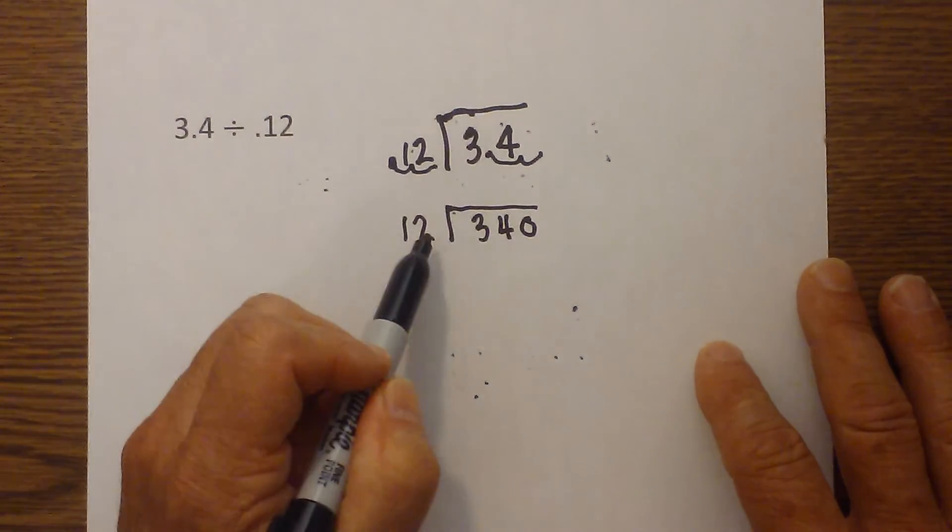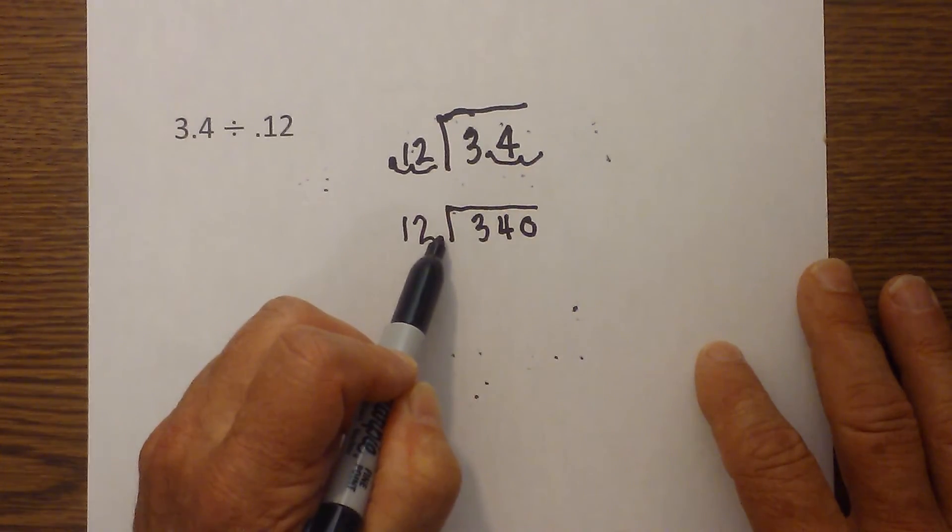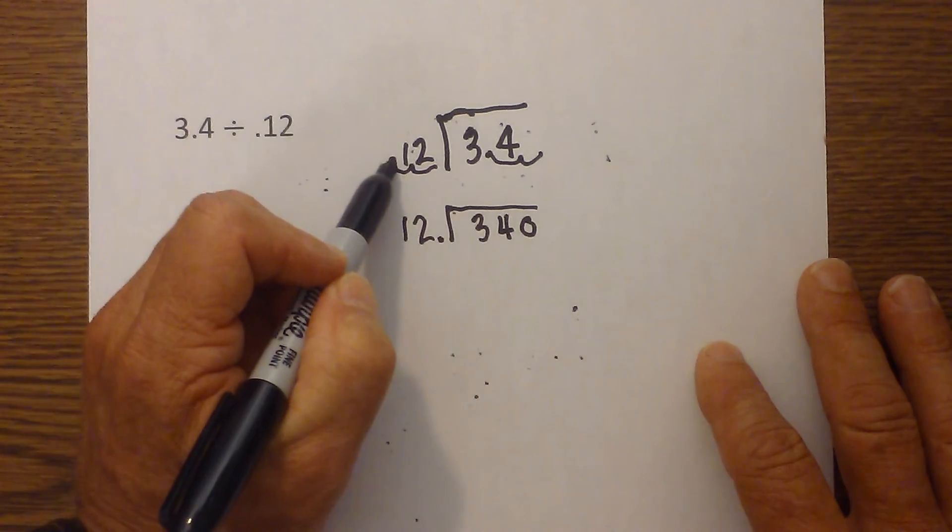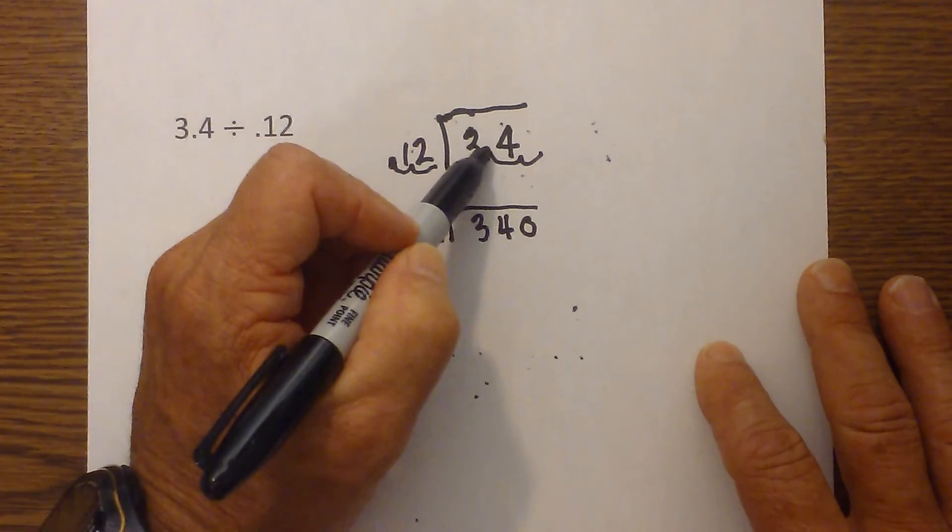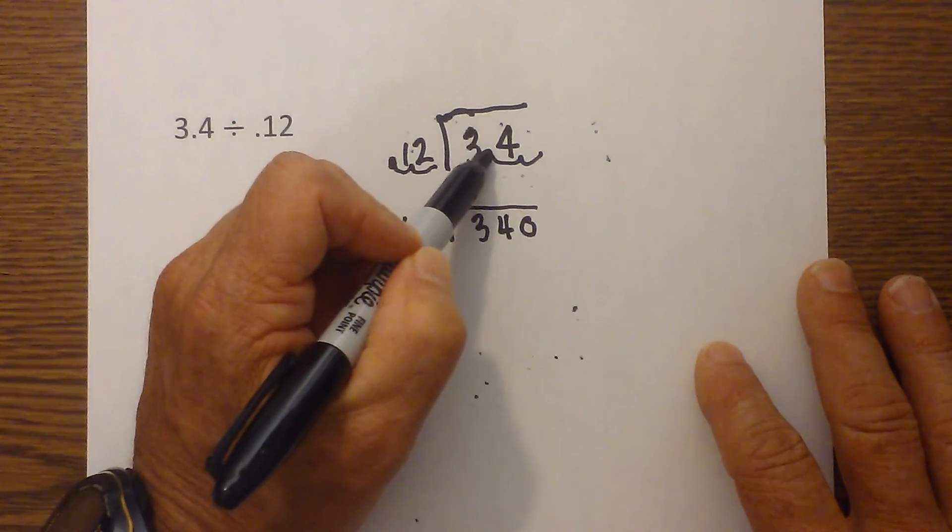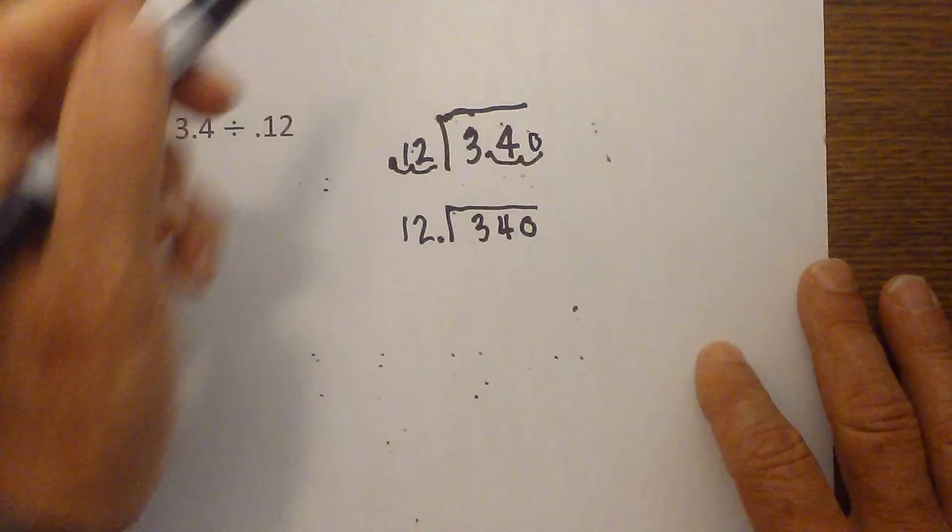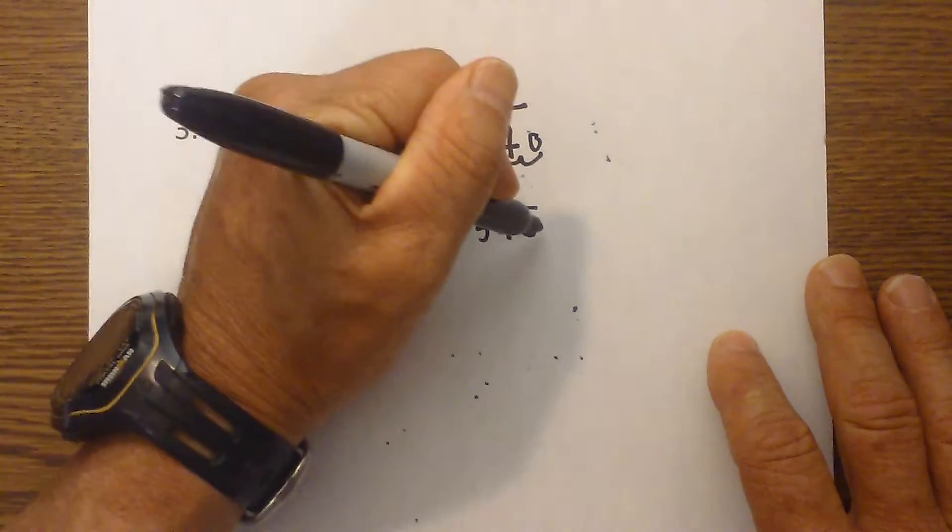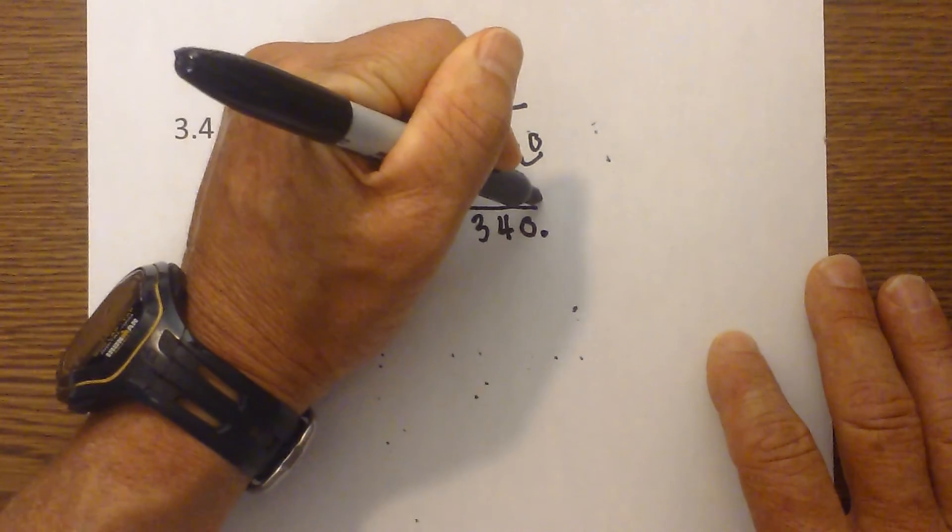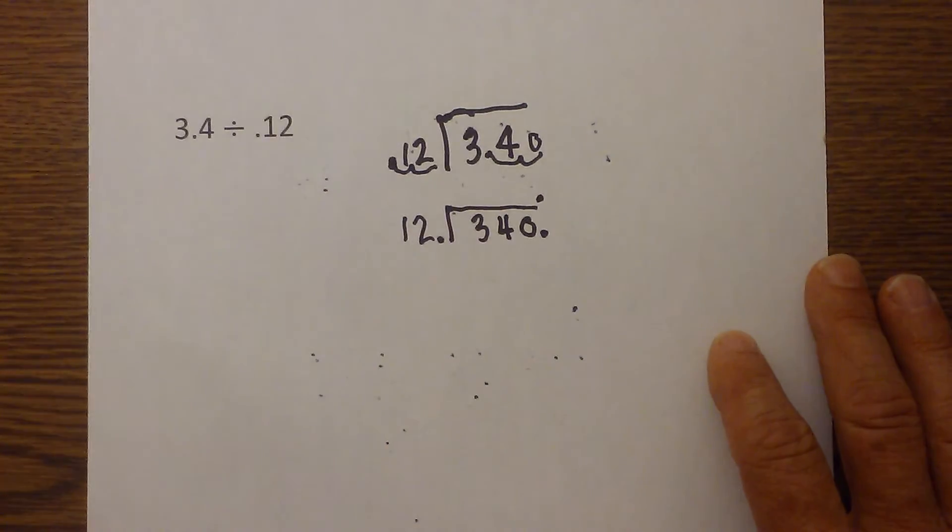So again, the decimal on the outside number needs to be here. So I needed to move it two places to accomplish this goal. And so what I do on the outside, I do on the inside. So I moved it two places. And I'll put a zero there. Now the decimal is here, so I'm going to place the decimal there.